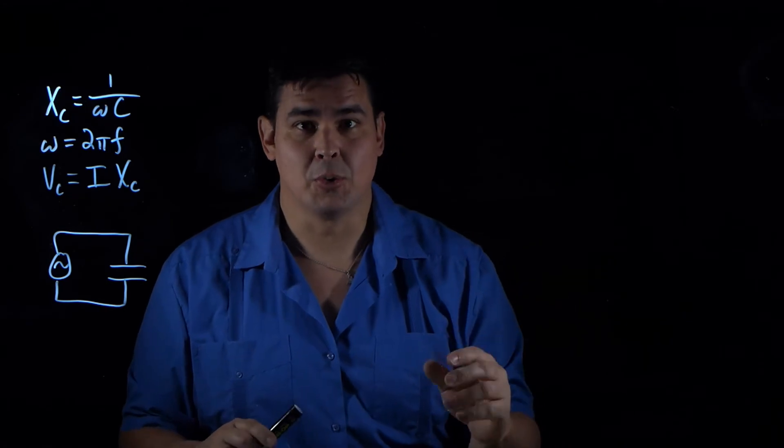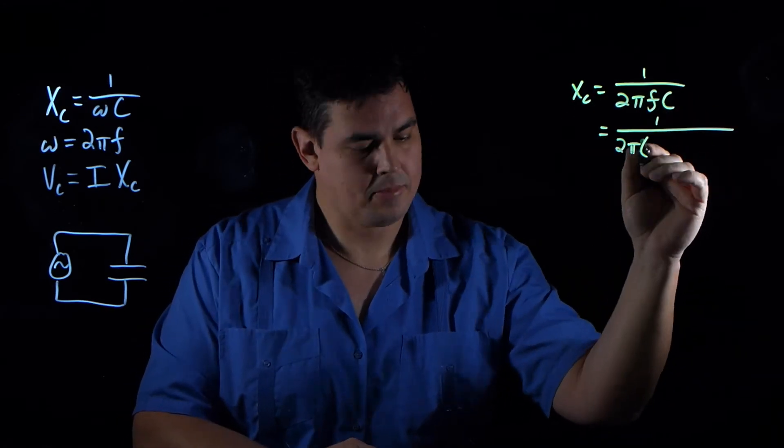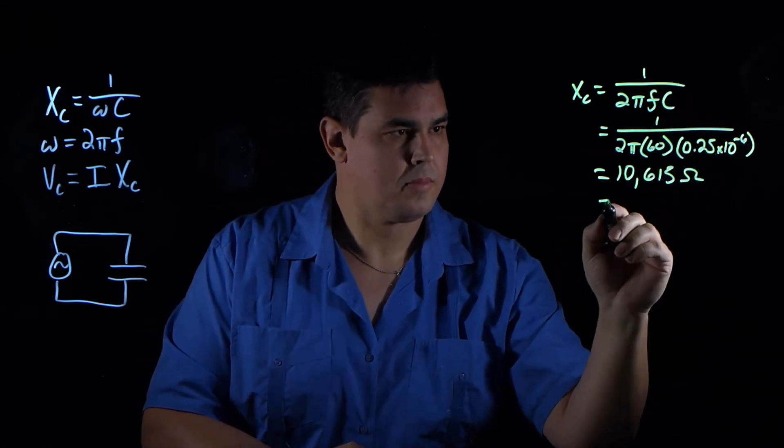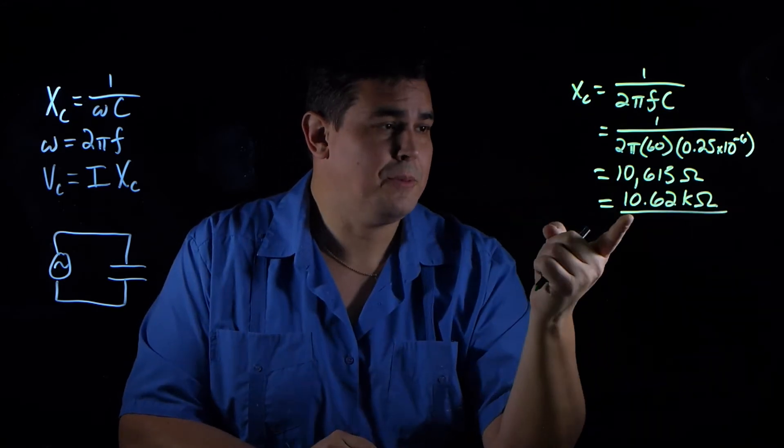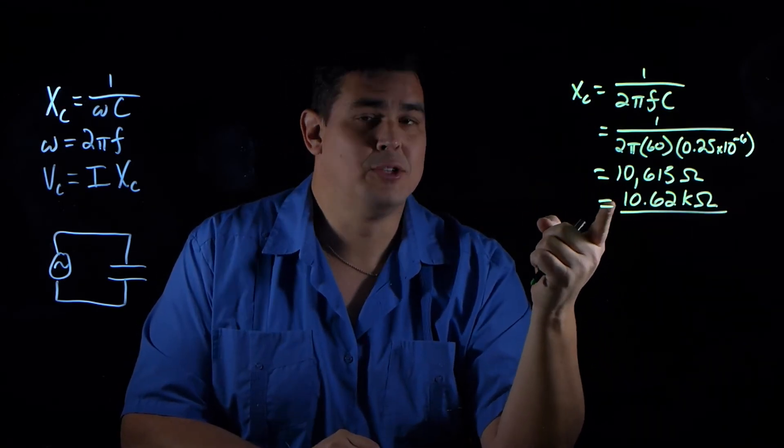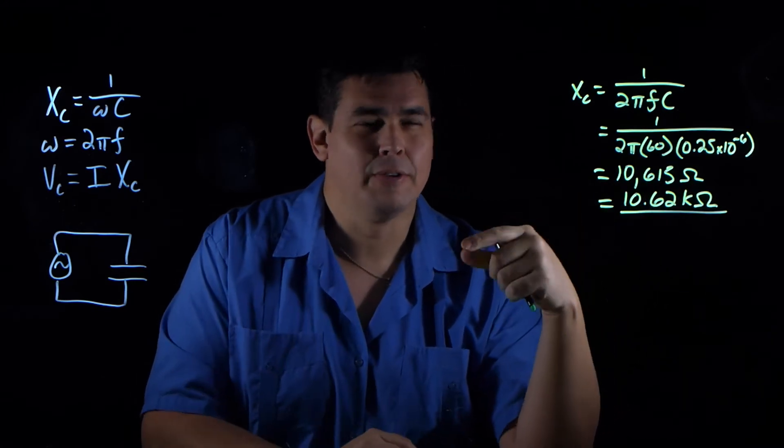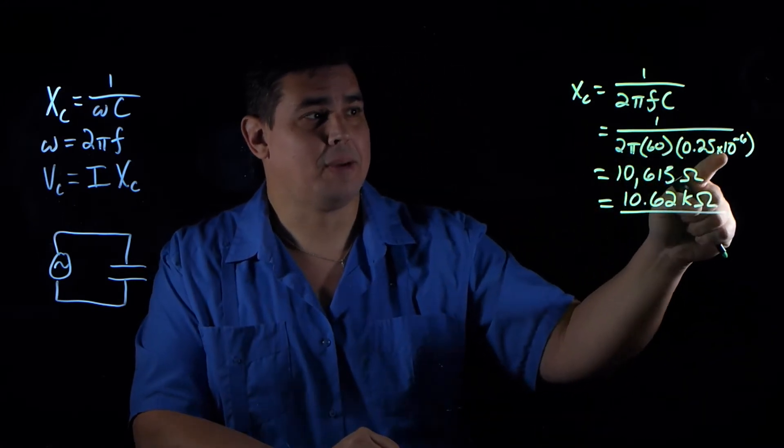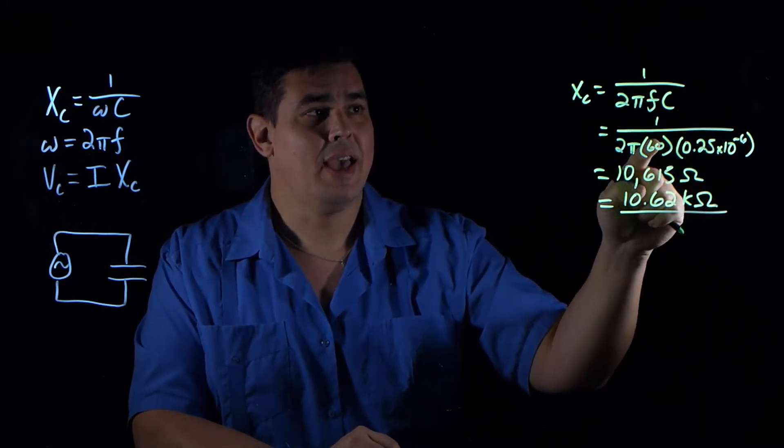Let's solve for the 60 Hertz one first. So I got my reactance. It's 10.62 kilo ohms, 10,615 ohms. So I plugged in the capacitance and the frequency, and I solved for that.